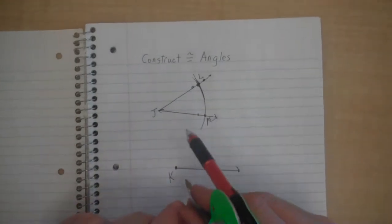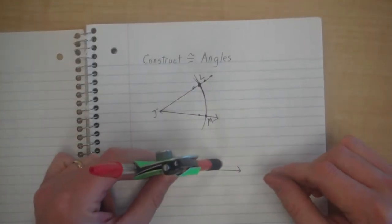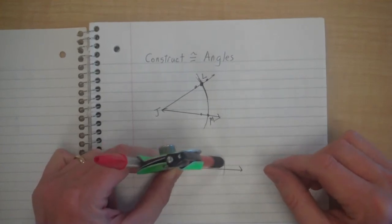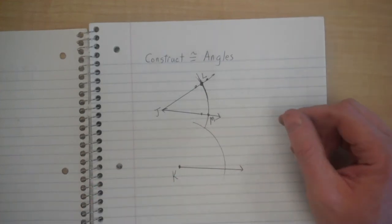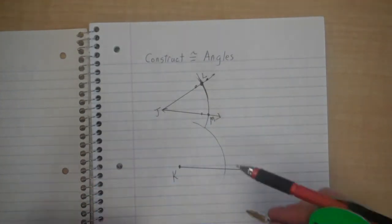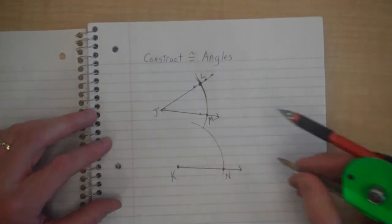I don't change the setting. I keep the setting that I used for that arc, and I put the pivot down here on K of the compass, and I'm going to draw an arc again. I'll call this point where it hits N.